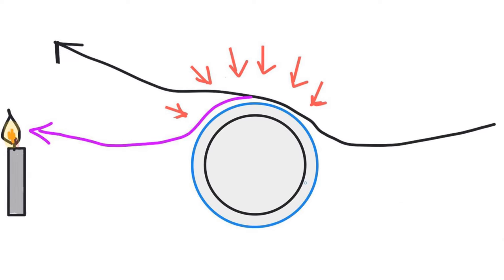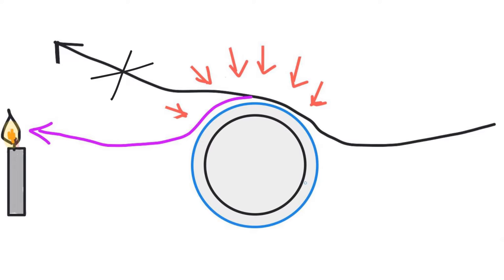An interesting experiment to explain this Coanda effect is that if you have a candle and an object placed in front of it, and you happen to blow from behind this object, you would expect the air molecules to get deflected by this object and move away from the candle. However, in reality, the air molecules tend to stick to this object, follow its course, and finally end up extinguishing the candle. This is because of the Coanda effect, whereby atmospheric pressure, which is relatively higher, tends to push down this column of air onto the surface of the object, hence leading to a wall attachment effect.